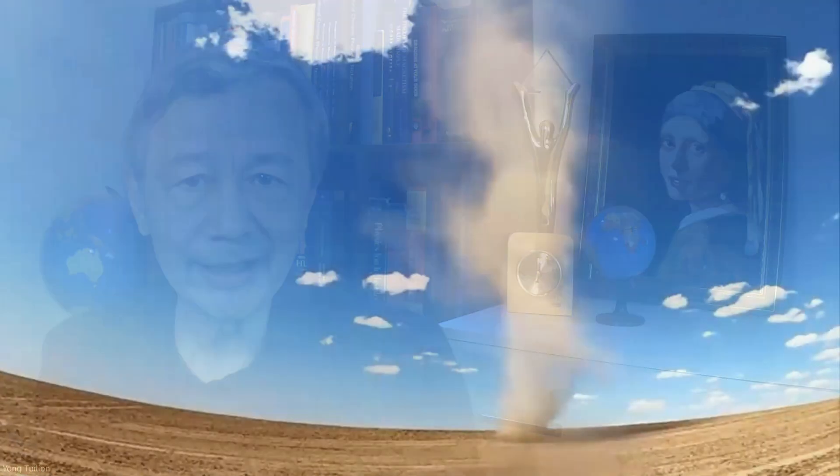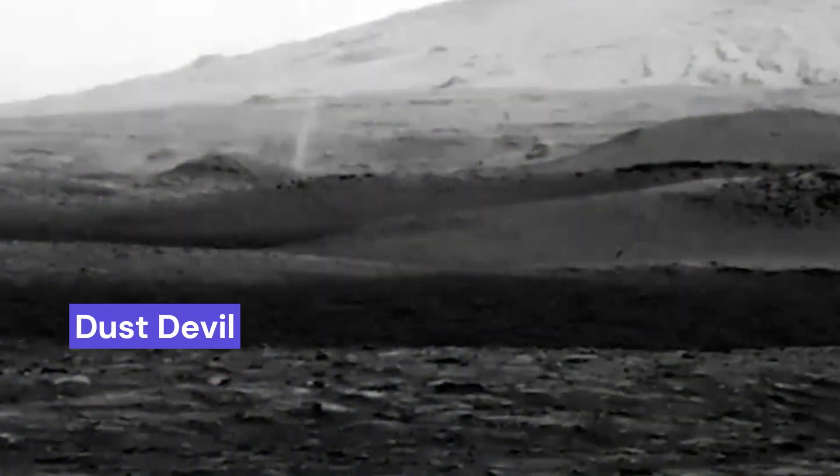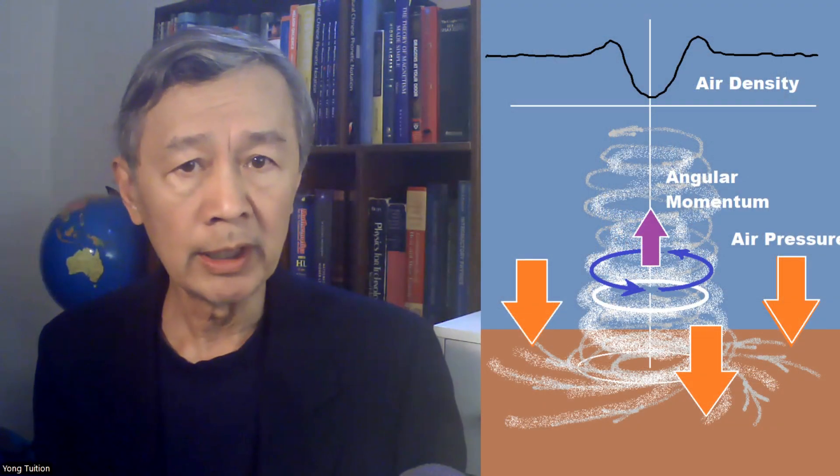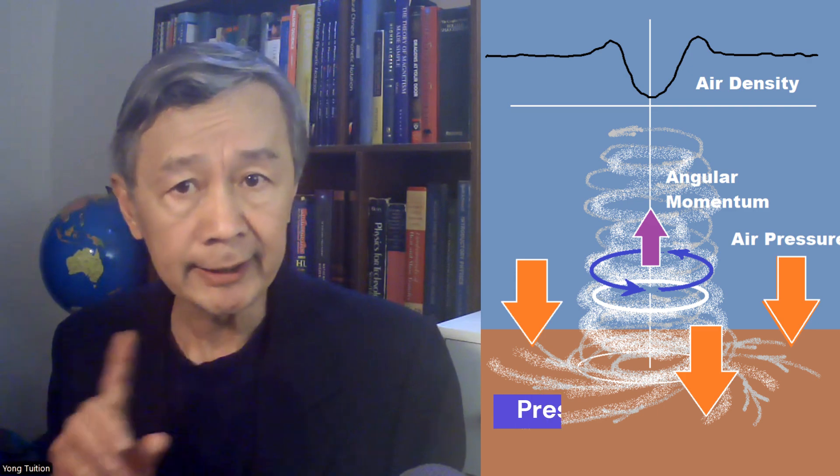I'm sure you have seen dust devils at least from many channels on YouTube. In particular, dust devils on Mars were recorded several times where the air pressure near the surface is just a few hectopascal, compared with 1013 hectopascal on Earth. In general, dust devils are considered as low pressure and warm core vortexes. But more importantly, the air density at the core is lower than the rotating air currents.